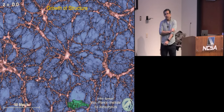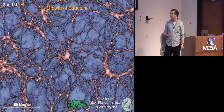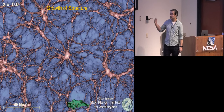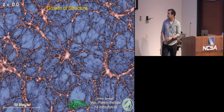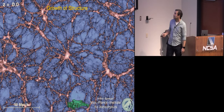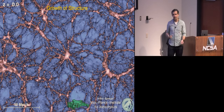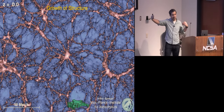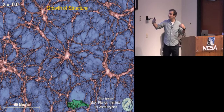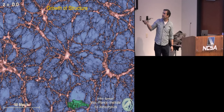We have a fairly good understanding of how structure forms gravitationally. We can take initial conditions and form the large-scale structure we see today via N-body simulations. Here's an example from work led by Volker Springel done about 15 years ago — you can see galaxy clusters and void regions. This is a very thin slice of our universe. If we integrated over a very large volume, the universe is homogeneous and isotropic, but in this narrow slice we can see this structure.